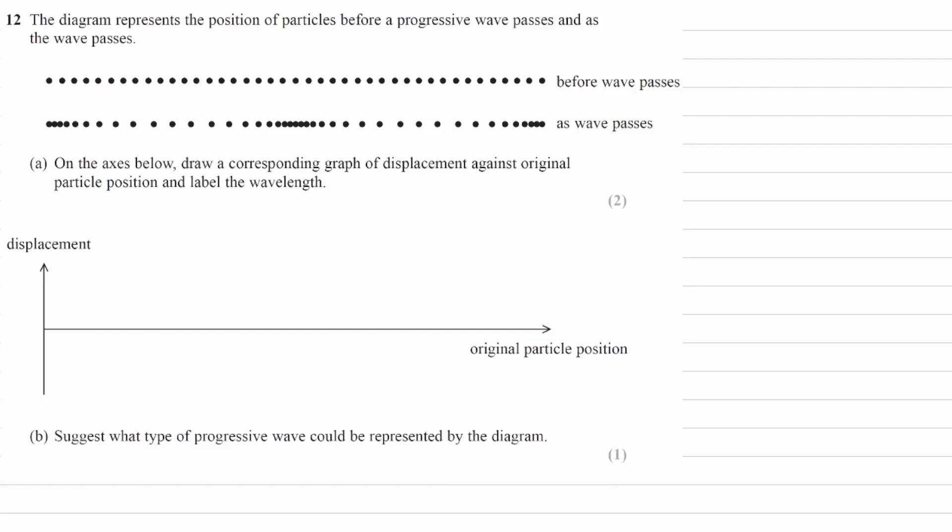The diagram represents the position of particles before a progressive wave passes and as the progressive wave passes. This is before the wave passes through, this is as the wave passes through.